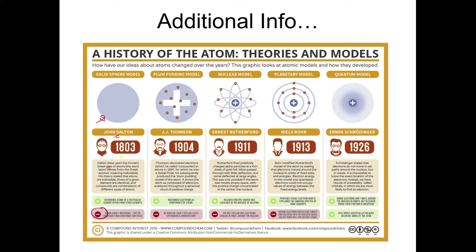The theory and models of atomic structure evolved from John Dalton to Thomson, Rutherford, and Niels Bohr. Scientists then enhanced Bohr's model — de Broglie and Erwin Schrödinger developed the quantum model in 1926. According to Schrödinger, electrons do not move in set paths around the nucleus, unlike Bohr's fixed orbit. It is impossible to know the exact location of an electron because it also behaves like a wave, residing in a region we call an orbital.